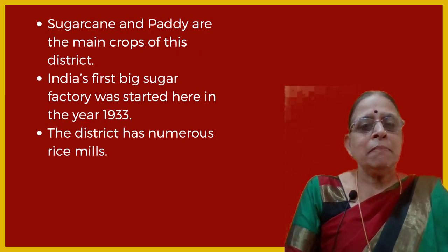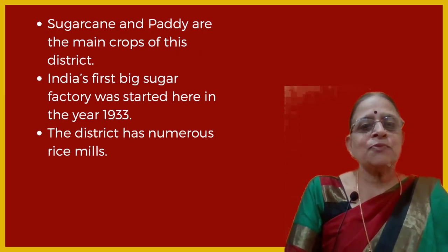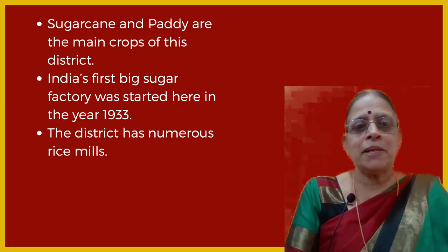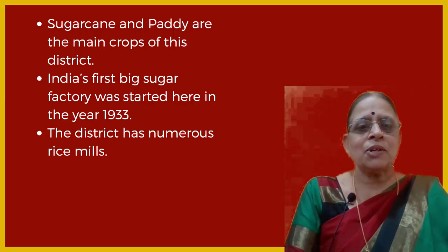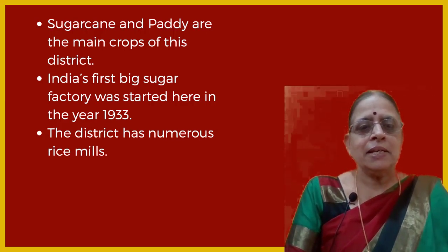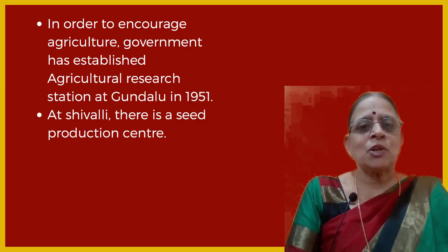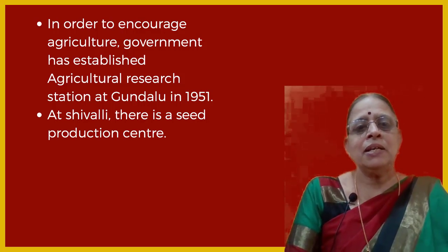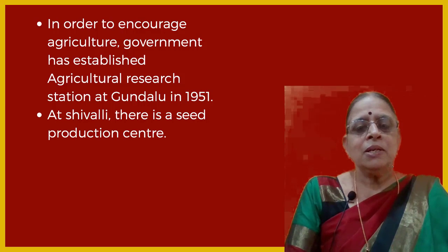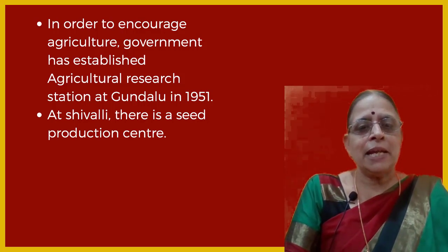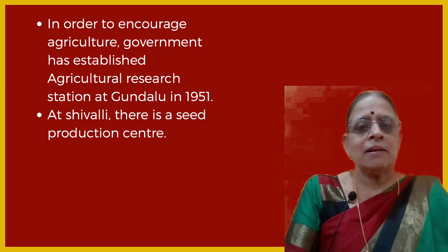Sugarcane and paddy are the main crops of this district. India's first big sugar factory was started here in the year 1933, before independence. The district has numerous rice mills. In order to encourage agriculture, the government established an Agricultural Research Station at Gundlu in 1951 to undertake programs to increase agriculture. There is also a seed production center to enable farmers to get all types of seeds.